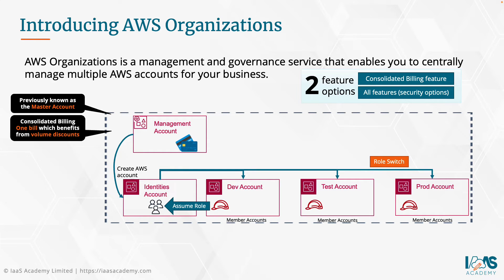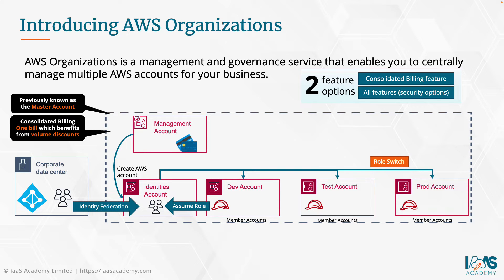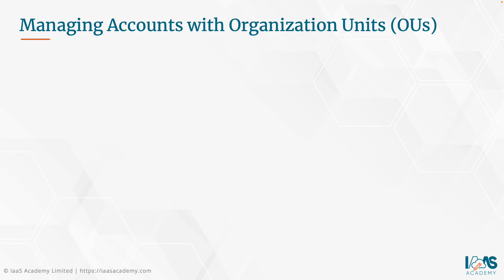Large enterprise organizations may also wish to consider using their on-premise identity and access management service to access the AWS cloud. This is possible through a process known as identity federation. Users in the corporate data center can use identity federation to log on to the identities account from which they can assume the roles necessary to access other accounts. Within your AWS Organizations deployment, you're likely to have many AWS accounts that share a common function or environment. A really cool management feature is the ability to create organization units, OUs, that act like containers within which you can group common and related member accounts. You can then apply service control policies, SCPs, which are security policies to these OUs.